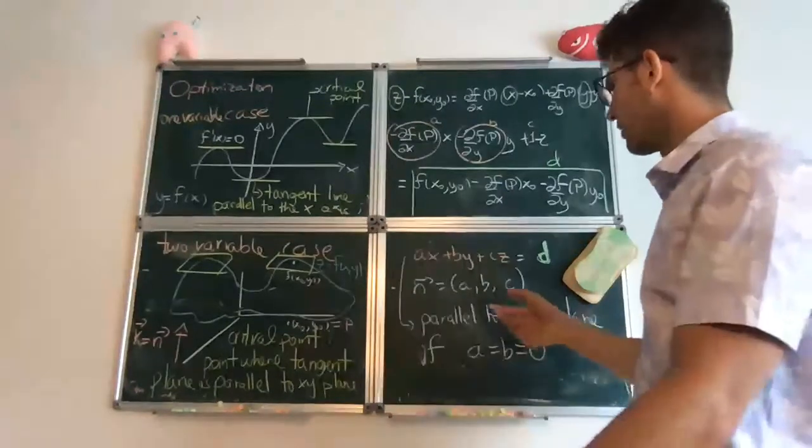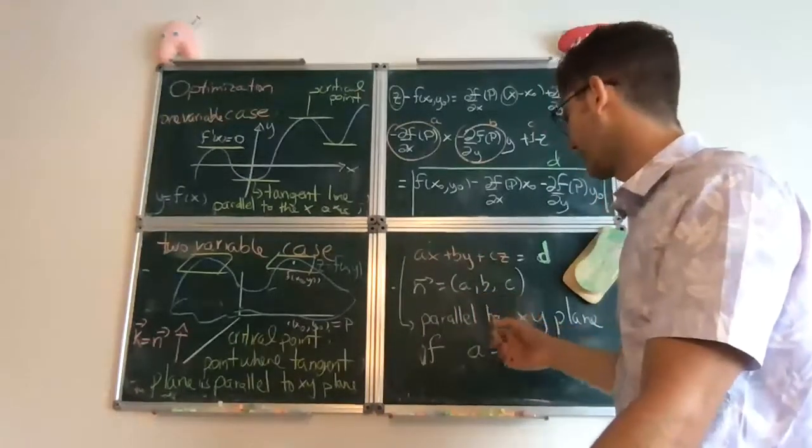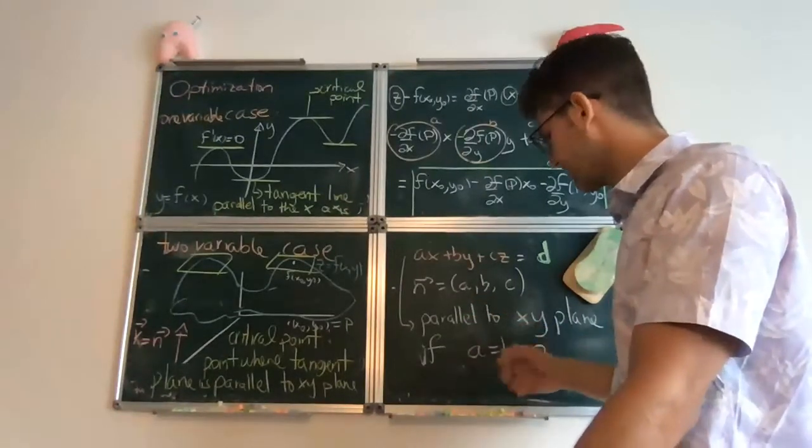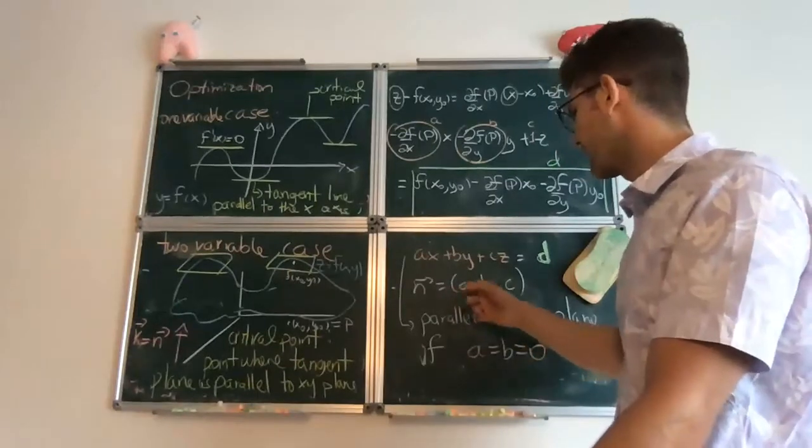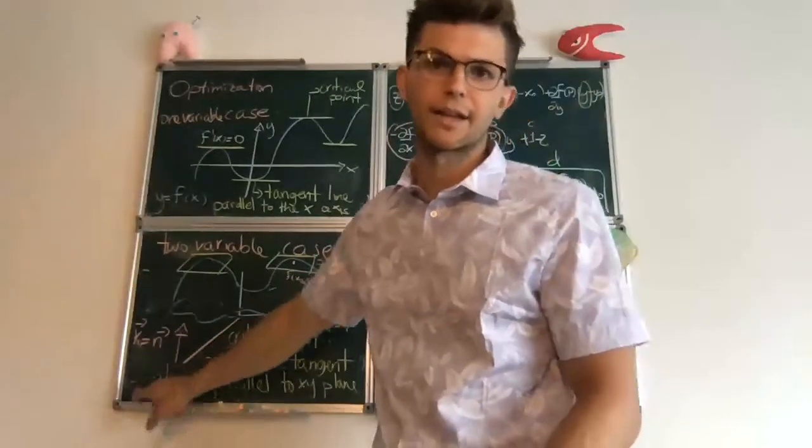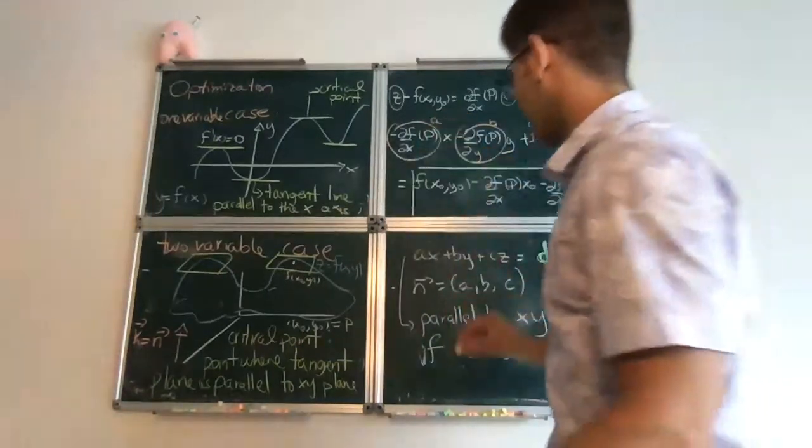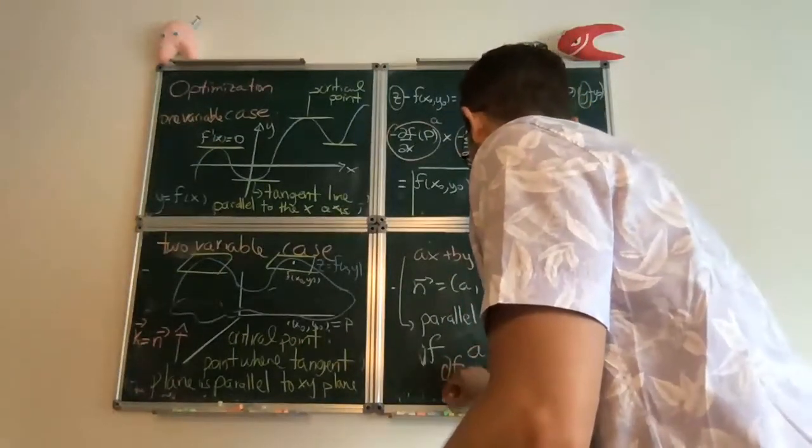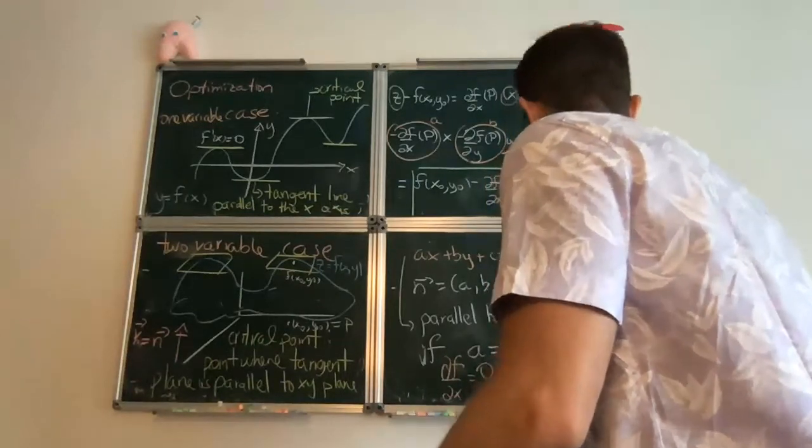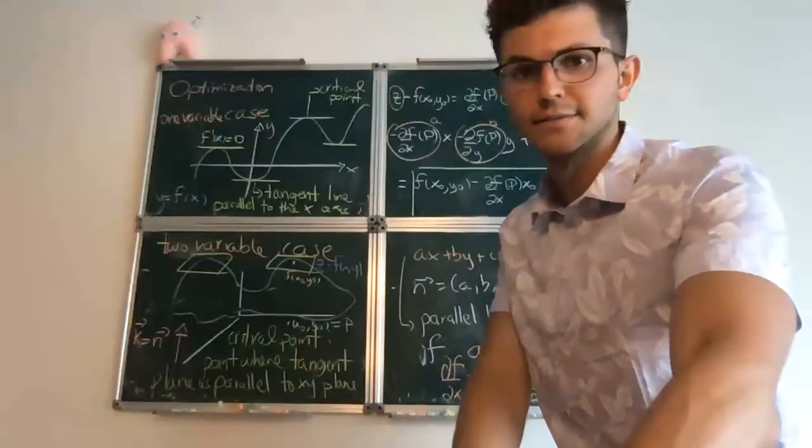And from that, this means that the normal vector you can just read from the coefficients of the equation of the plane. And so the condition that the plane has to be parallel to the xy-plane just translates into the condition that a and b have to be zero, because remember that the normal vector to the xy-plane is just the vector k. So if a and b are zero, that means that the partial derivative of f with respect to x is zero at that point, and the partial derivative of f with respect to y is zero at that point. So we will make this into a definition next.